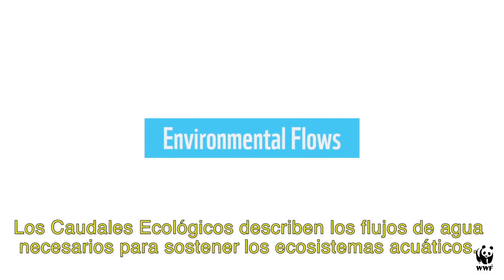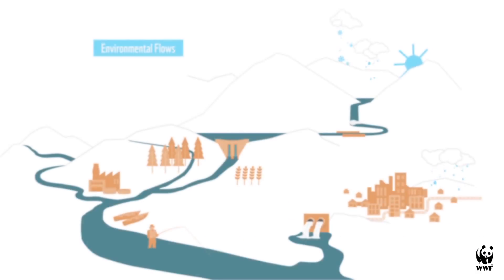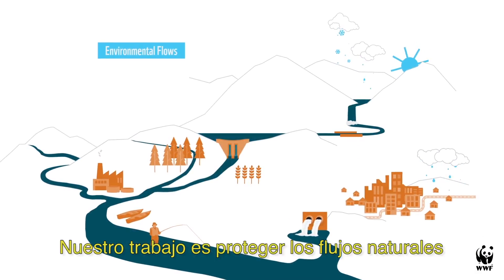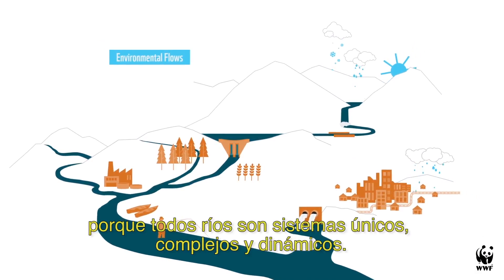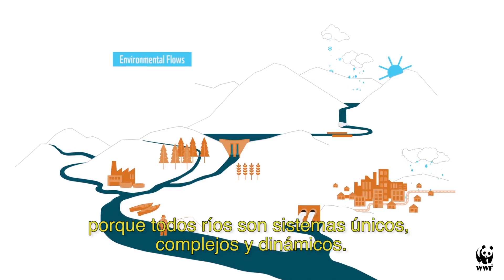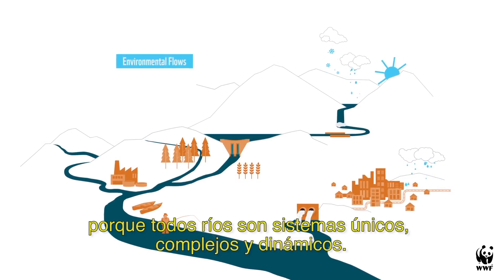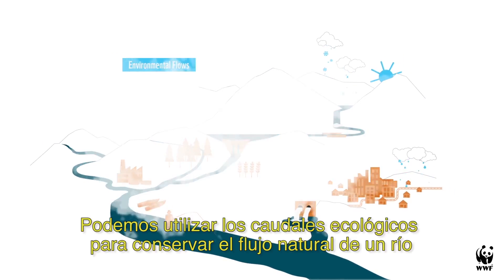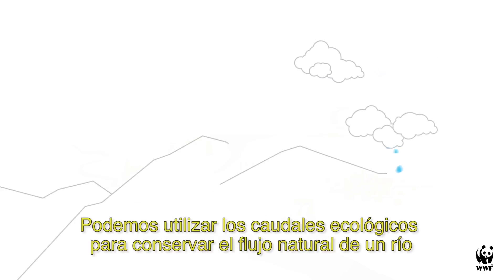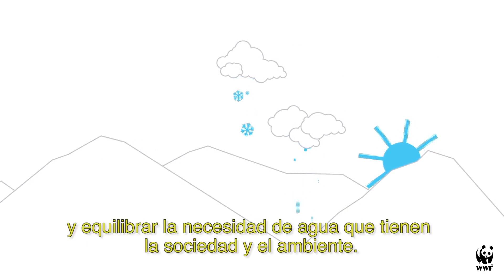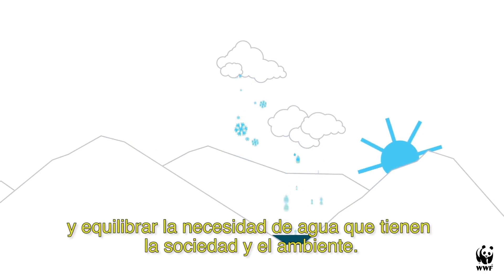Environmental flows describe the flows of water required to sustain a river's ecosystems. Our job is to protect the natural flows because all waterways are unique, complex and dynamic systems. We can use environmental flows to mimic the natural flow pattern of a river and balance the water needs of both society and the environment.